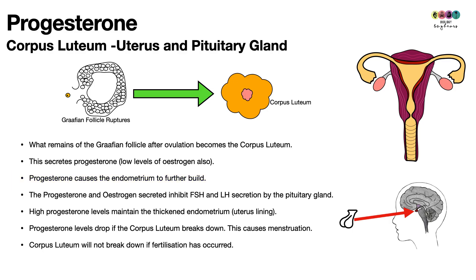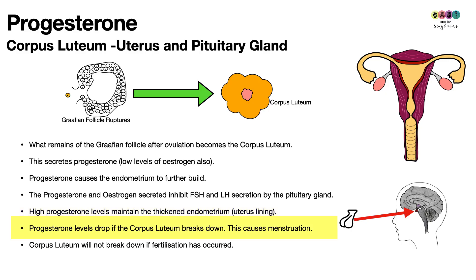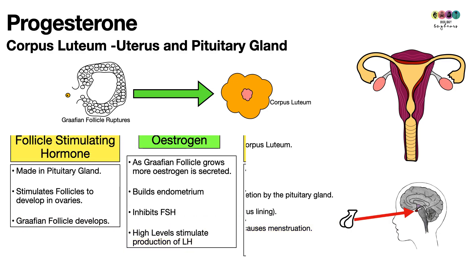High levels of progesterone and estrogen inhibit the secretion of Follicle Stimulating Hormone and Luteinizing Hormone from the pituitary gland. High progesterone levels are associated with maintaining a thickened endometrium — keeping the uterine lining built up. Progesterone levels will drop if the corpus luteum breaks down, and it is this drop that causes menstruation. However, the corpus luteum will not break down if fertilization has occurred.